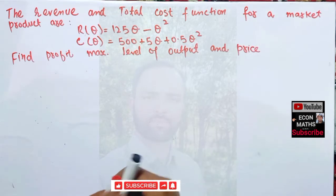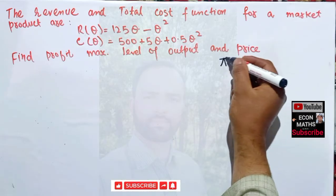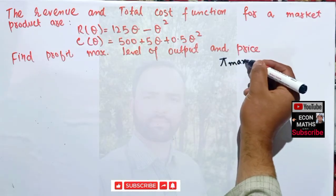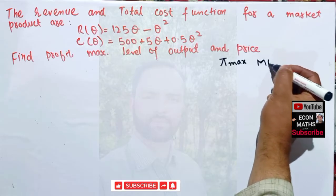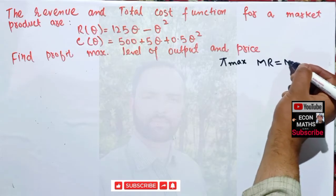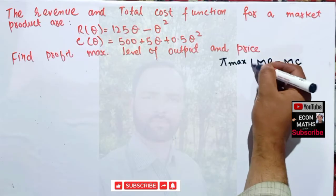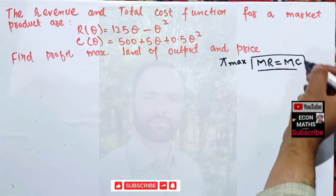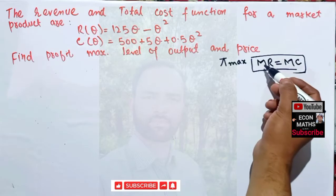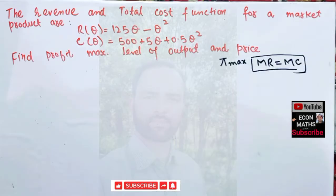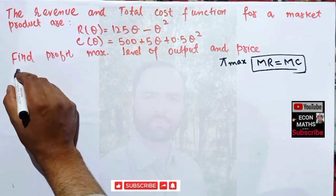As covered in the earlier video, the profit maximization condition is that marginal revenue should be equal to marginal cost. This is the first-order condition — we have to equate the marginal revenue and marginal cost functions.